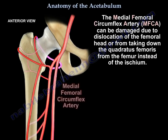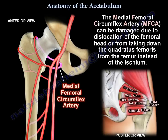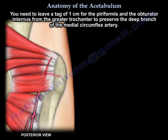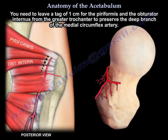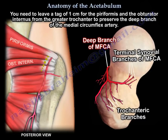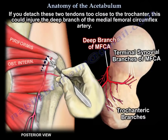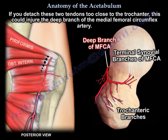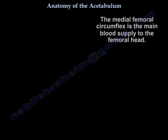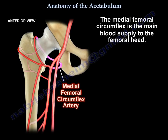The medial femoral circumflex artery can be damaged from dislocation of the femoral head or from taking down the quadratus from the femur instead of the ischium. You need to leave a tag of 1 cm for the piriformis and the obturator internus from the greater trochanter to preserve the deep branch of the medial femoral circumflex artery. If you detach these two tendons too close to the trochanter, you could injure that deep branch. The medial femoral circumflex is the main blood supply to the femoral head.